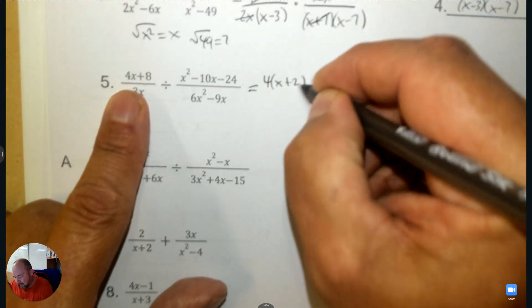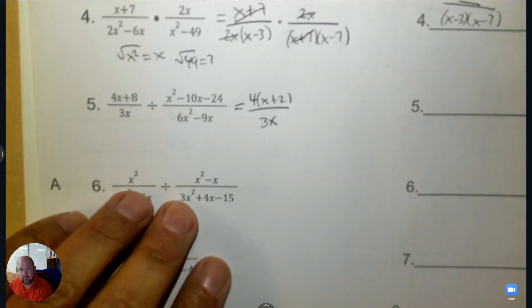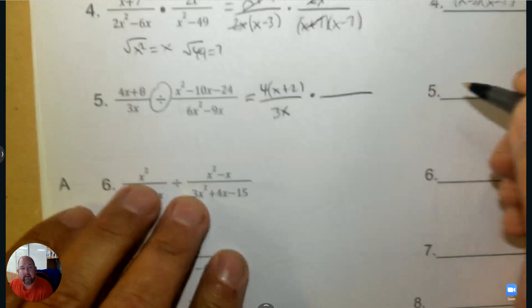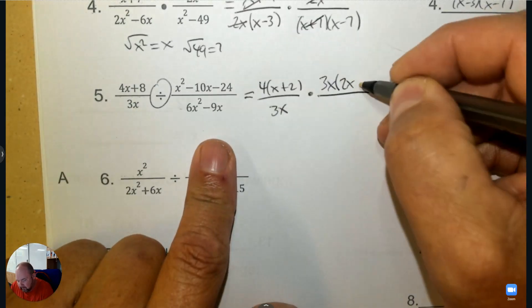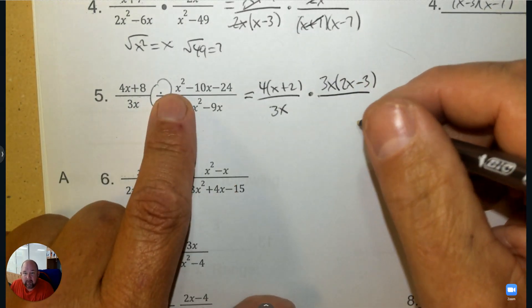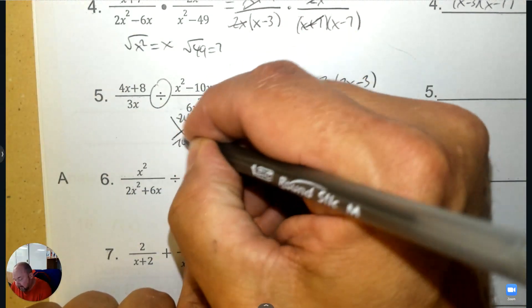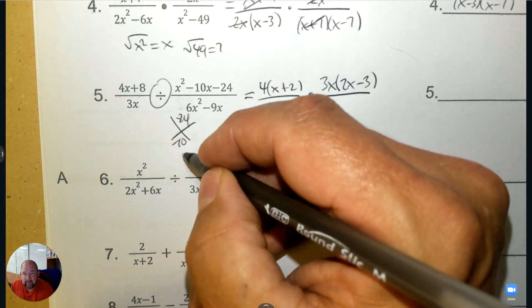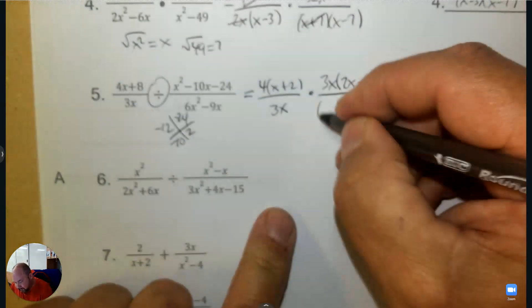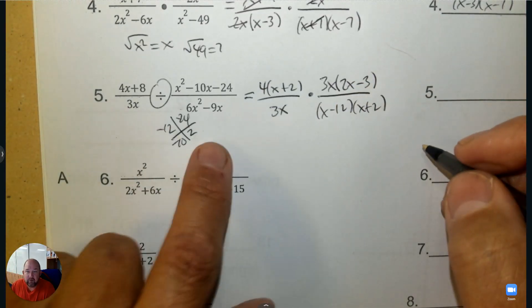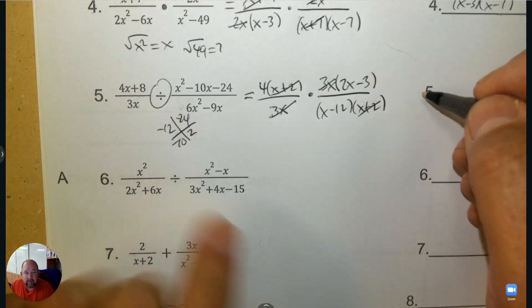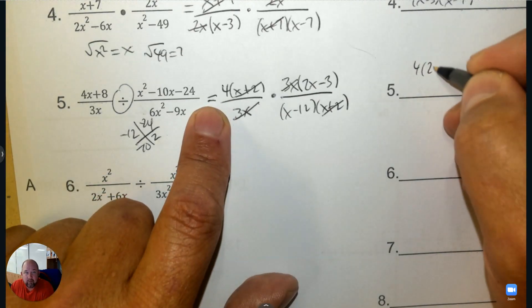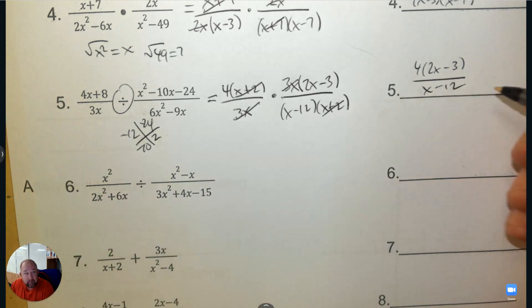Number 5, we're going to factor. Factor out a 4 and divide. 3x is prime. When you divide, you change it to multiplying and flip the last one — the reciprocal. So we're going to factor out a 3x as we flip. Then factor this with a diamond: negative 24 and negative 10. The two numbers that fit are negative 12 and 2 — they multiply to negative 24 and add to negative 10. The (x plus 2)'s cross out, 3x crosses out, and I'm left with 4, (2x minus 3) in the numerator, and (x minus 12) in the denominator.